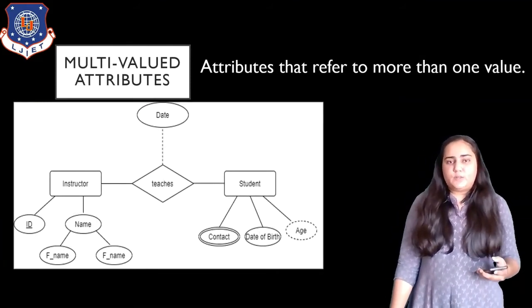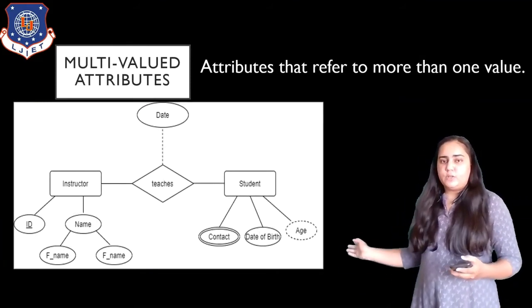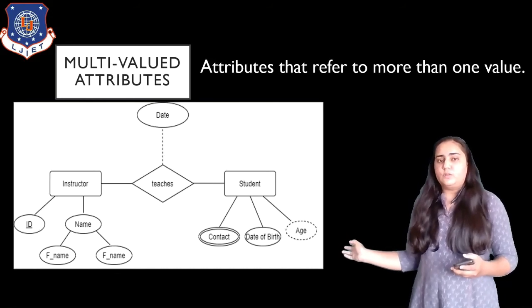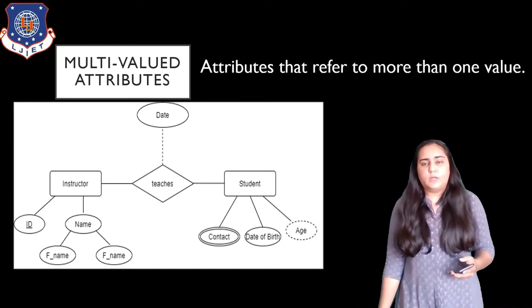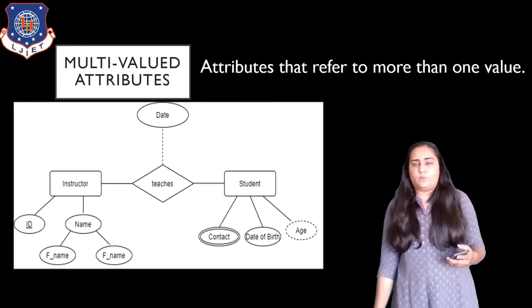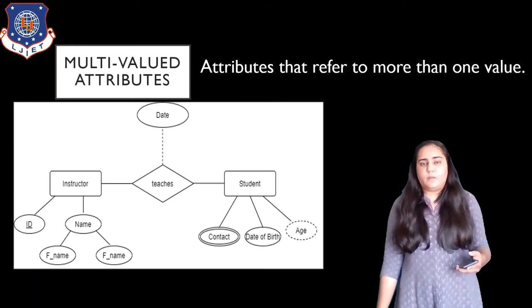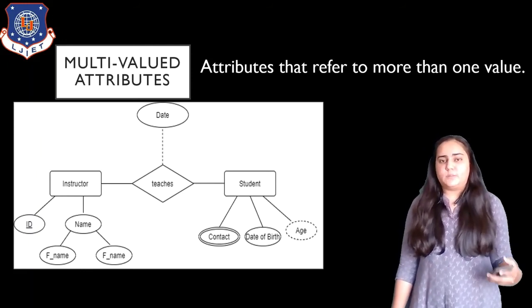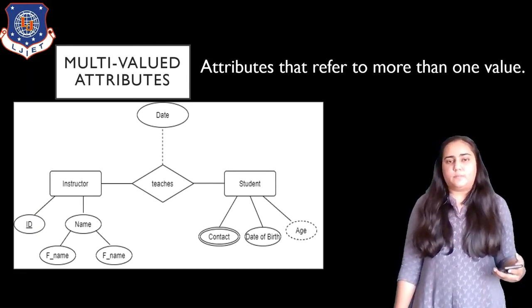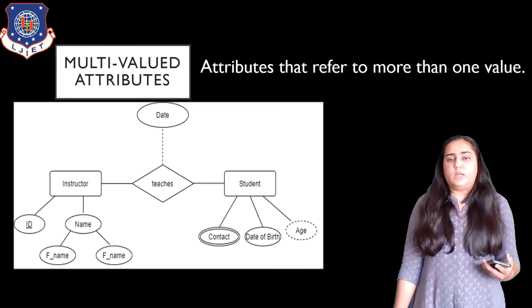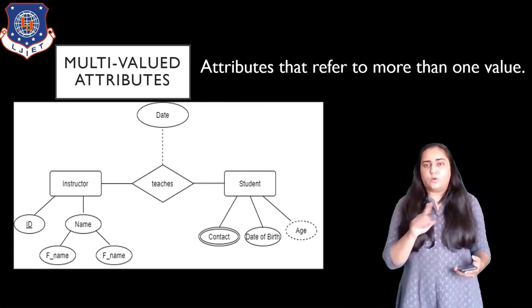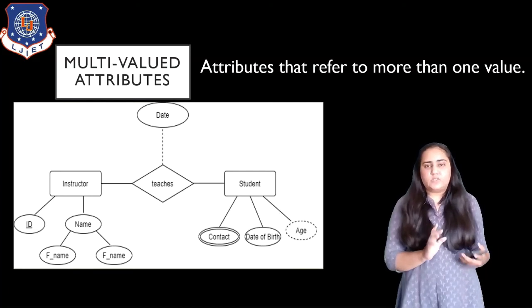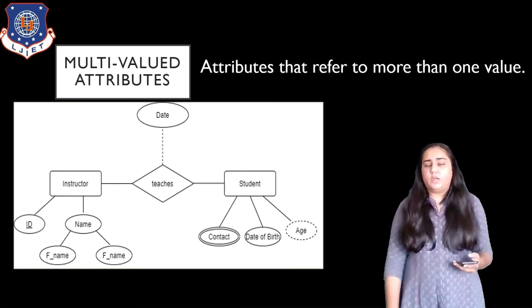Next, we have a multi-valued attribute. For example, 'contact' is a multi-valued attribute for a student because a student can have multiple mobile numbers. To show such an attribute in the diagram, we draw double ellipses instead of a single one used for ordinary attributes.